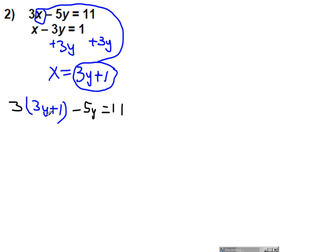Okay, now I'll go back and distribute. You get 9y plus 3 minus 5y equals 11. Those two on this left side, 9y and 5y can be combined to make 4y. And now we're just solving this like normal, getting the letter by itself. So subtract 3. We get 4y equals 8. Divide by 4. And y equals 2.